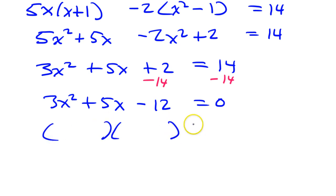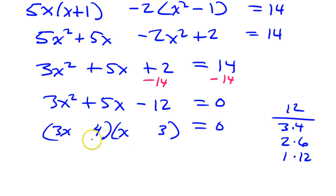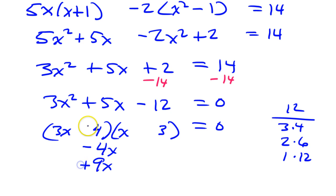Hopefully this will factor. If it doesn't factor, I'll have to use the quadratic formula. 3x squared is going to factor as 3x and x. 12 can be 3 times 4, or 2 times 6, or 1 times 12. I'll start with 3 and 4. I know not to put the 3 here because I would make a common factor in one set of parentheses, so I'll try 4 here and 3 here. Inner plus outer must equal middle: inner I have 4x, outer I have 9x. I can make 5x out of this if I have a negative 4 and a positive 9 — so minus 4, positive 3. A negative times a positive is a negative for the negative 12. So this is working.